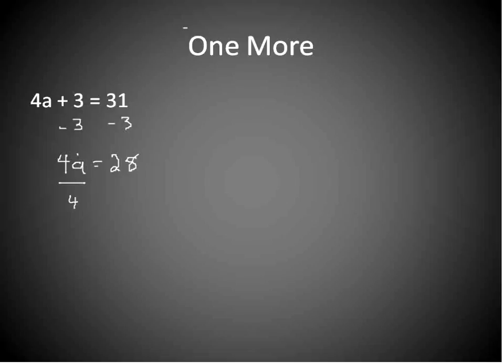That will leave me with 28. Now I'm going to divide both sides by 4. That will help me to isolate a by itself. And 28 divided by 4 is 7. So a is equal to 7.